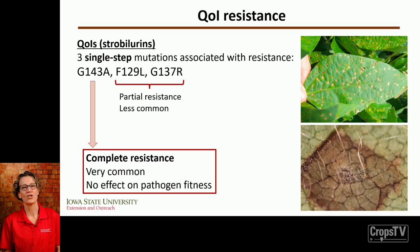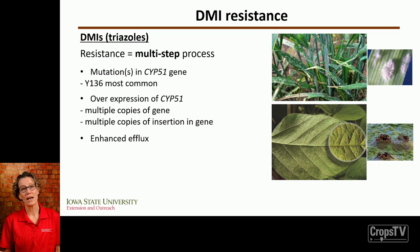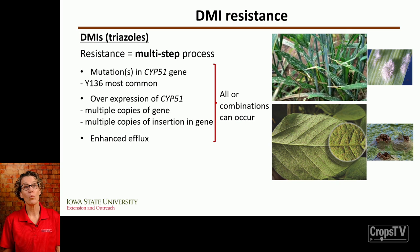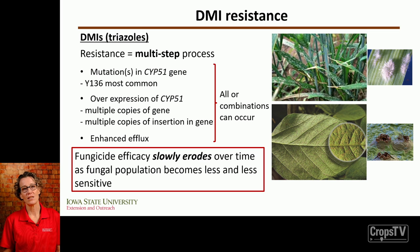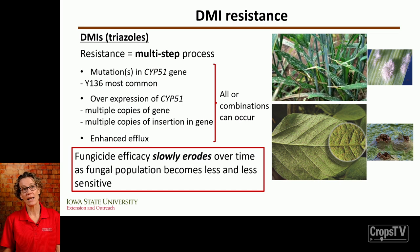The other QOI mutations are less common and only give partial resistance. DMI resistance is usually a multi-step process involving a combination of mutations, and fungicide efficacy slowly erodes over time as the fungal population becomes less sensitive. We are working with colleagues in Kentucky to monitor DMI resistance in corn leaf spot and soybean pathogens, to track how these populations are evolving every year.